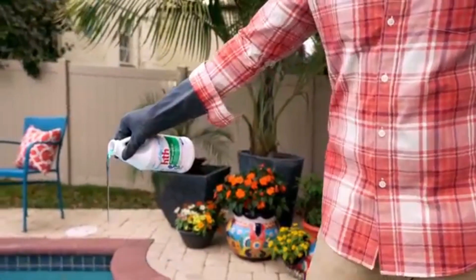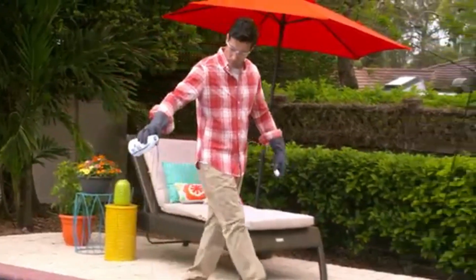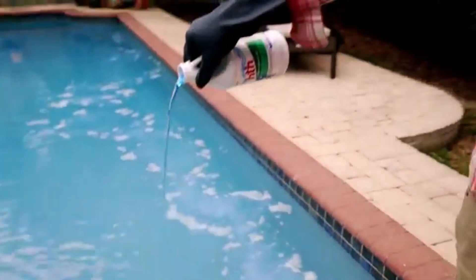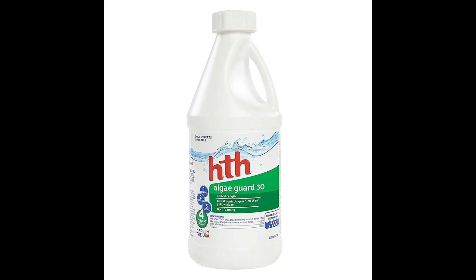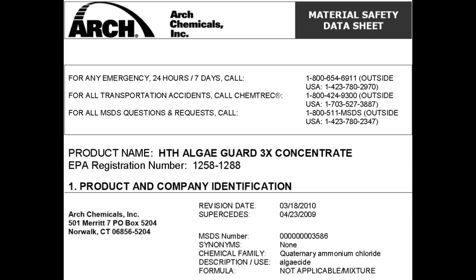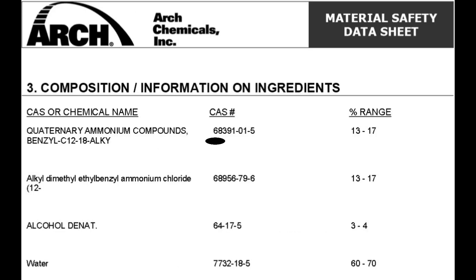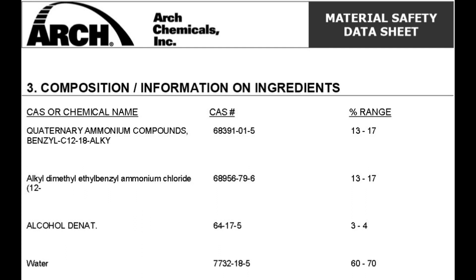The video continues: 'Then use HDH Algaecide to treat the affected area. Let the pump run overnight and keep using the algaecide once a week to prevent future growth.' Now we're getting into the algaecide part. I looked this algaecide up — it's HDH Algaecide 30, and the SDS sheet clearly shows dimethyl ethyl benzoyl benzyl ammonium chloride. Folks, this is an ammonium compound, which simply means ammonia. There are better and much cheaper alternatives out there.